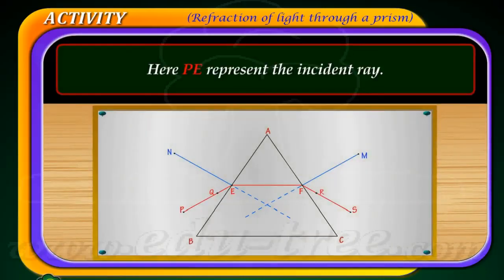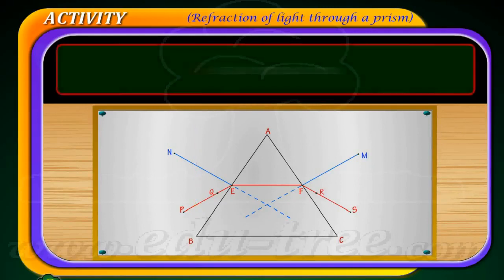Here, P E represents the incident ray, E F is the refracted ray, and F S is the emergent ray.